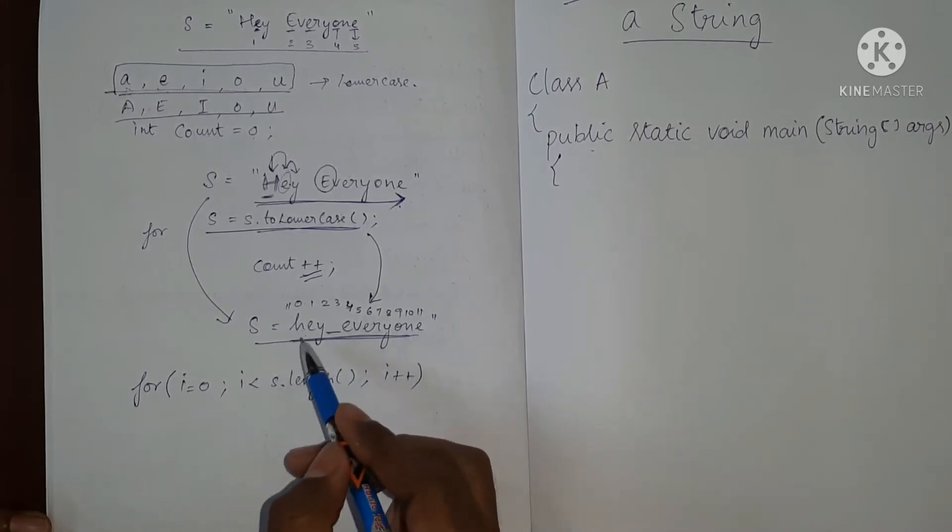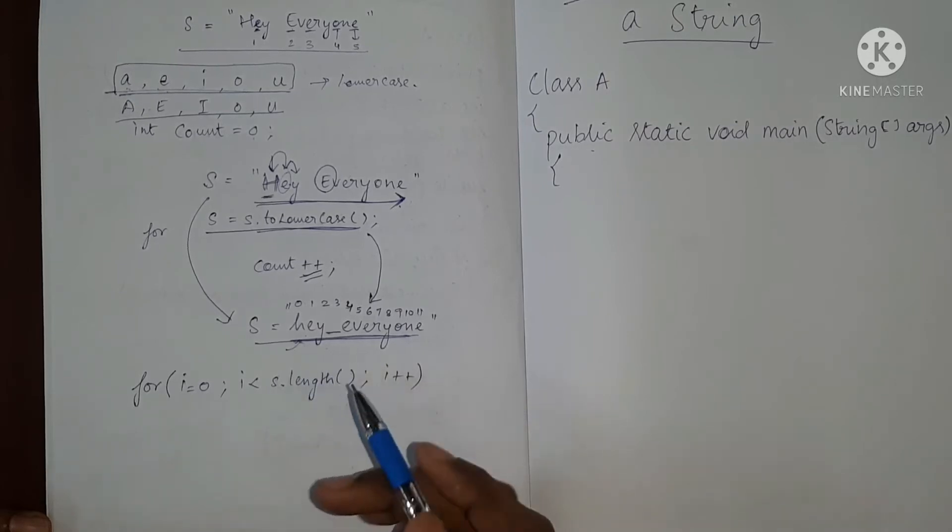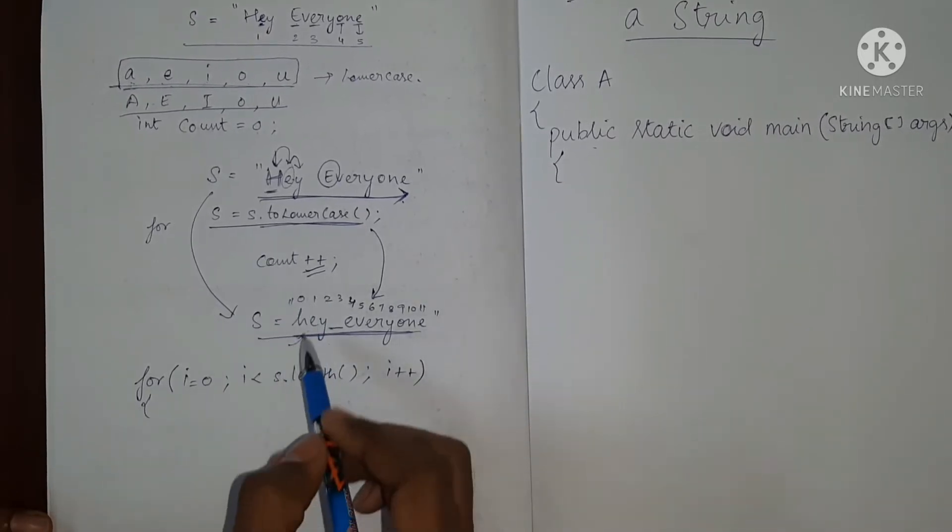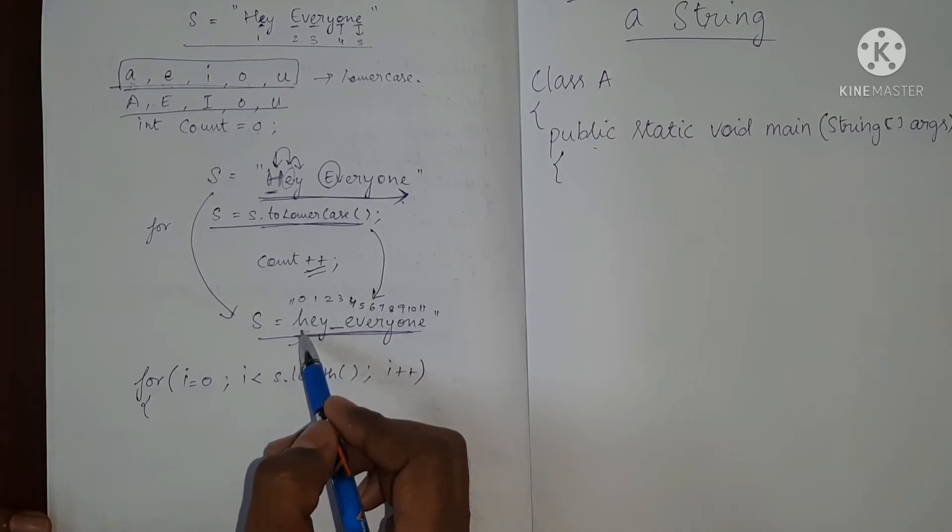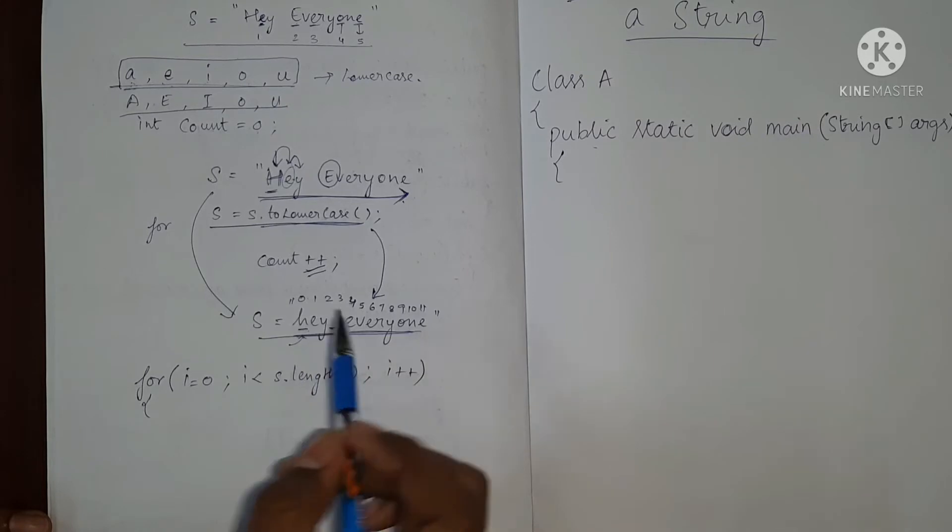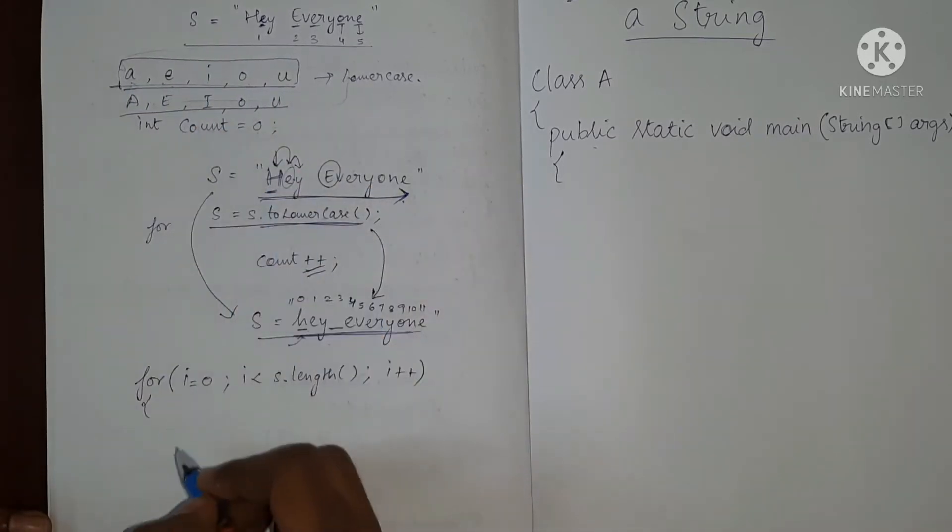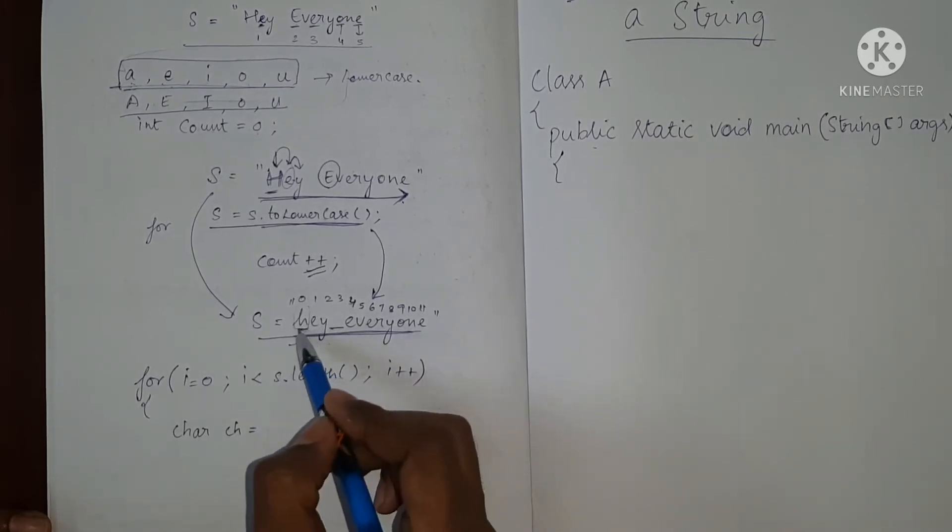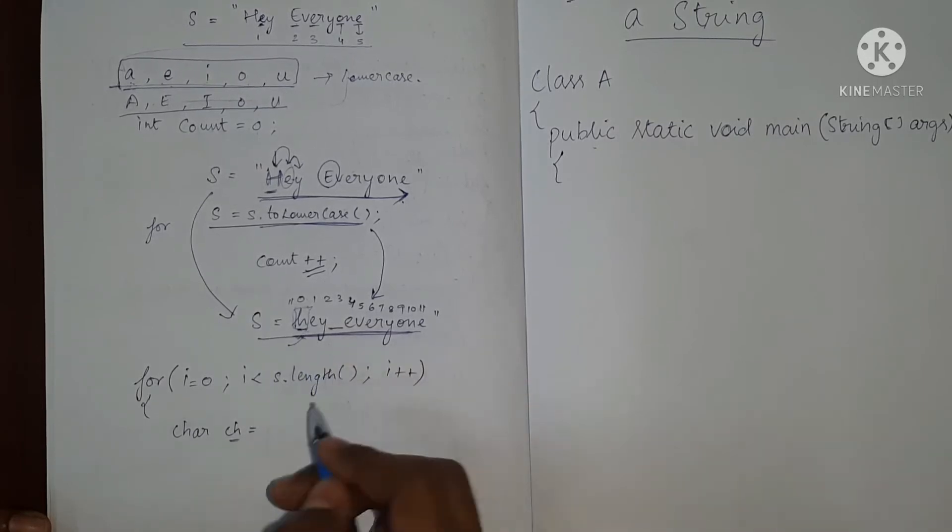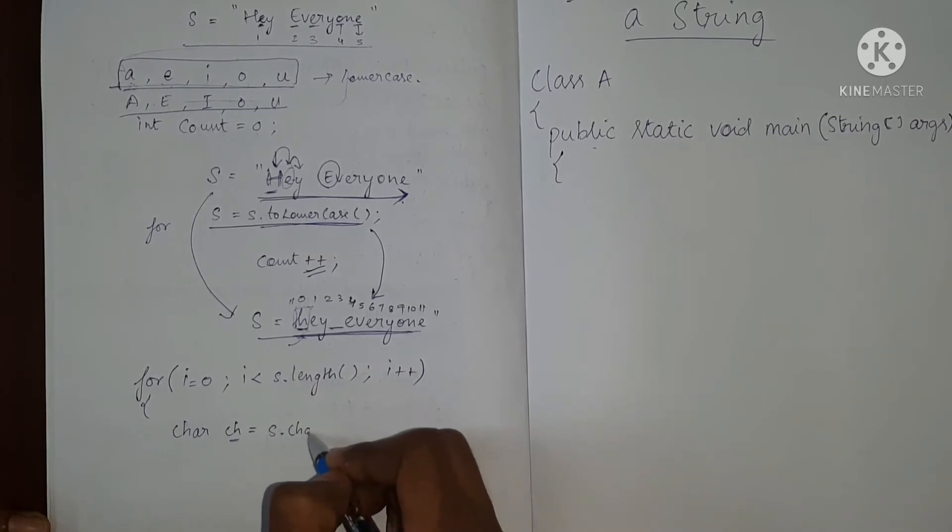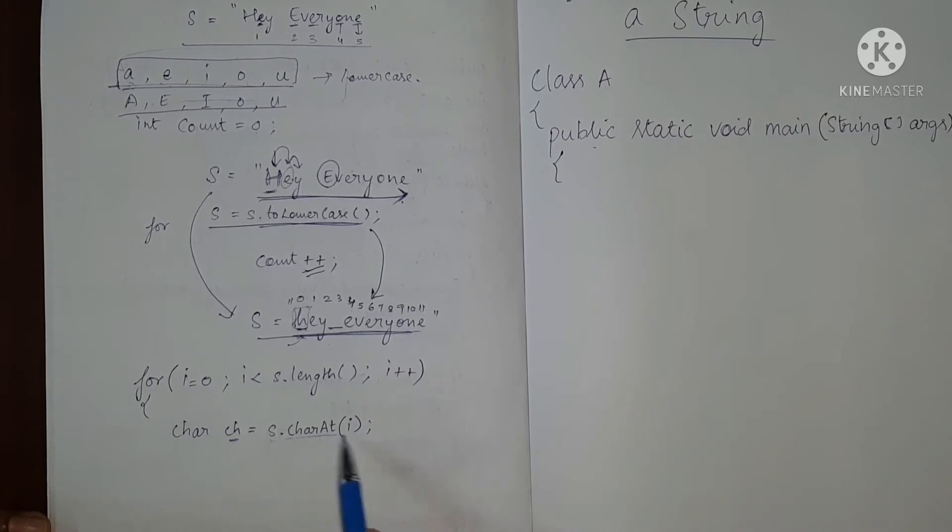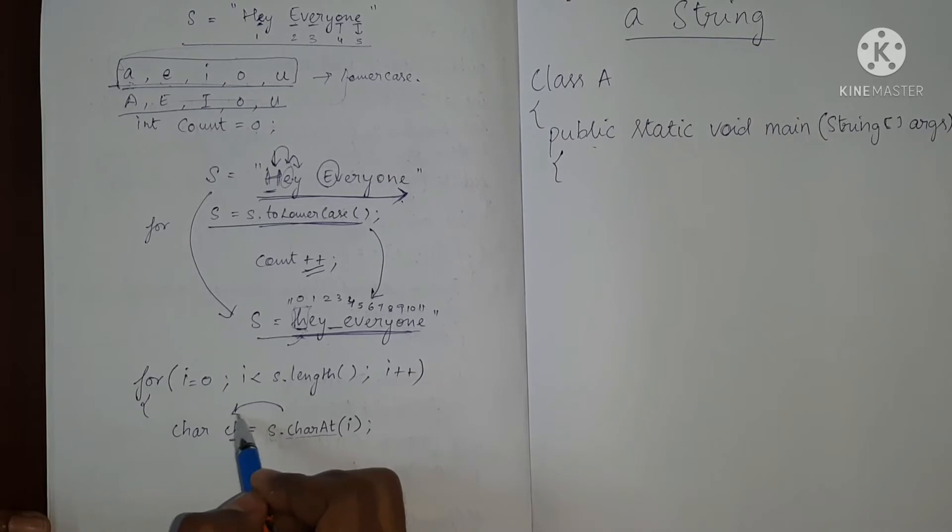It will go up to I less than S dot length and then I plus plus. So this will help us traverse in the string one index number after other. So what we have to do inside? We have to check if the character present at ith location is equal to any of these A, E, I, O, U. So first let me create a character variable say CH and I'm going to store this character into this CH. So what is this character? This character is S dot character at index number I. So initially I is zero. So S is the string character at location zero is H and H will be stored here in the first iteration.